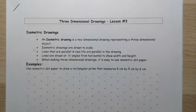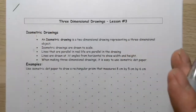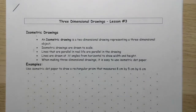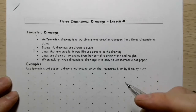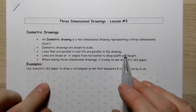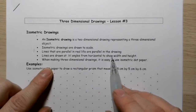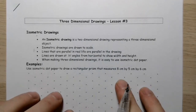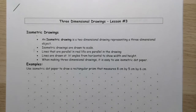An isometric drawing is a two-dimensional drawing that represents a three-dimensional object. It tries to give you some idea of the depth of the object. It's drawn not from face on, not from the side, not from the top, but from a perspective that's off a little bit of all of those, so that you can see multiple faces of the object. They're drawn to scale, lines that are parallel in real life are parallel in the drawing, and lines are drawn at 30-degree angles from the horizontal to show width and height. We're going to use isometric dot paper in just a moment to draw a diagram to help you get a sense of how this works.